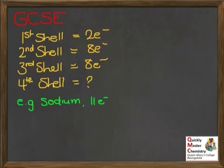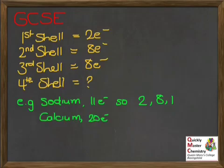So you'd have been asked to do things like sodium with 11 electrons. What would that have been? 2, 8, 1 would be the way you'd have arranged those electrons. Calcium with 20 electrons - what would that have been? 2, 8, 8, 2 to spread those 20 electrons across the shells. Now that's probably as far as you'd have gone at GCSE.